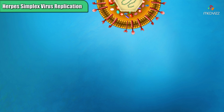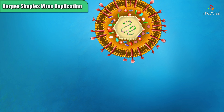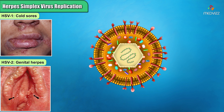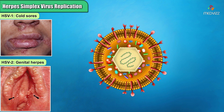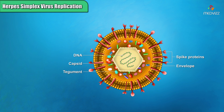An important example of a DNA virus is herpes simplex virus, or HSV, strains of which cause cold sores and genital herpes. The virion consists of a double-stranded DNA chromosome packed within an icosahedral capsid. The capsid is surrounded by about 15 different kinds of virus-encoded proteins, collectively called tegument. The tegument is contained within a host-derived membrane envelope with several kinds of spike proteins.